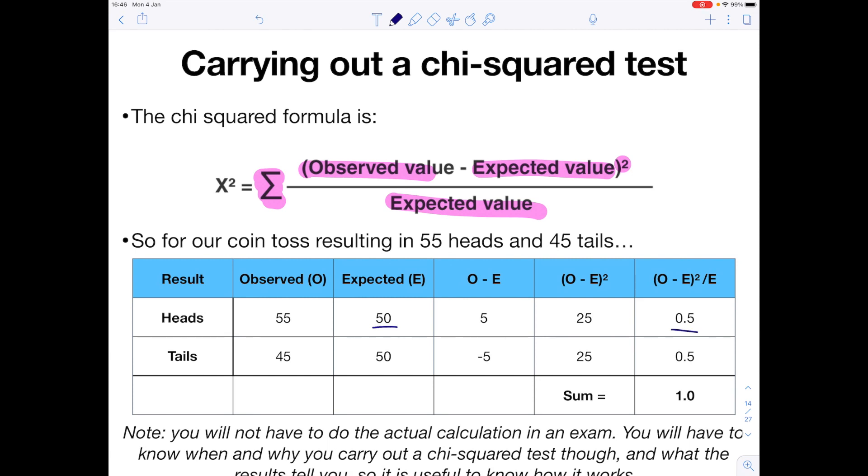Now looking along the tails row, we know from the previous slide that our observed number was 45. We expected there to be 50, so if we do observed minus expected we get minus 5. If you square a negative number it becomes positive, so minus 5 squared is 25. If we do 25 divided by our expected value which was 50, again we get 0.5. We sum together those two numbers to get an answer of 1.